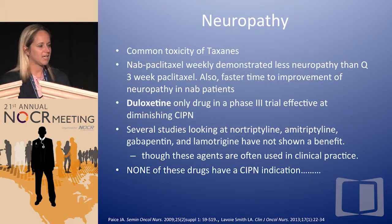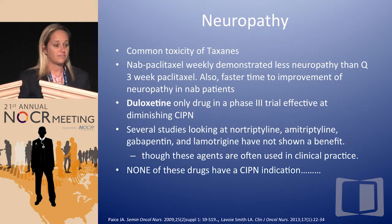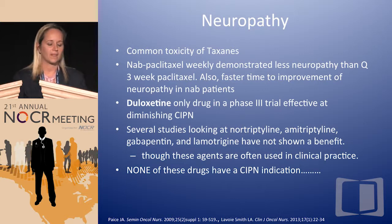I put one slide in on neuropathy because we are big taxane users in lung cancer, making it a very common toxicity. NAB-paclitaxel versus Q3-week paclitaxel showed less neuropathy and shorter time to improvement, but that was weekly NAB-paclitaxel versus Q3-week paclitaxel. In breast cancer data, NAB-paclitaxel actually caused more neuropathy. Duloxetine is technically the only drug in a Phase III trial shown to be effective at diminishing chemotherapy-induced peripheral neuropathy. None of the commonly used agents have an approved indication for chemotherapy-induced peripheral neuropathy.